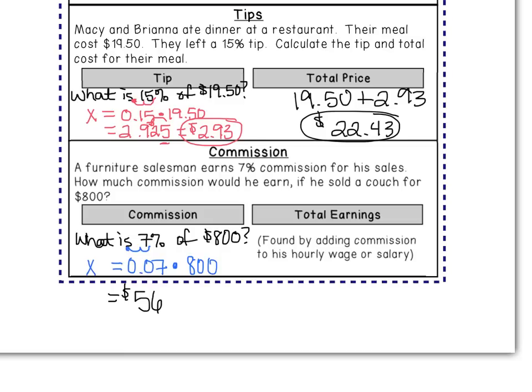To find his total earnings, we don't have enough information in this problem because we don't know his hourly wage or salary. To find total earnings, you would add the $56 to whatever his hourly wage or salary is. All three — sales tax, tips, and commission — are found the same way: multiply your percent by the cost. For sales tax and tip, you then add that result to the original price to find the total.